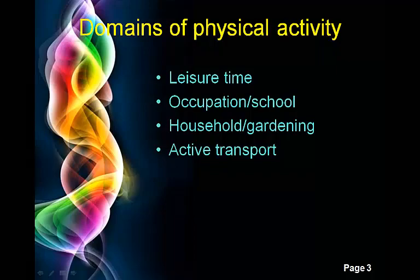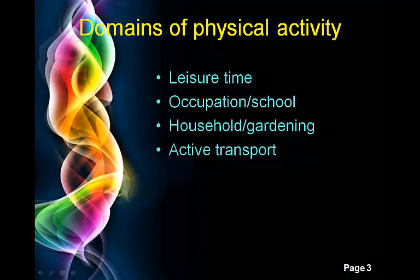There are four different domains of physical activity — the four main areas where physical activity is most likely to occur. These are: leisure time, where you might choose to go for a walk on the beach; at work or school; during household work or gardening; and also active transport.